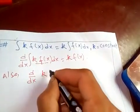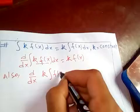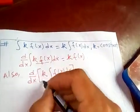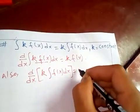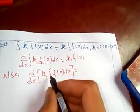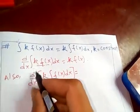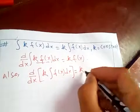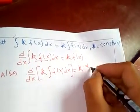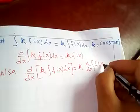I'm going to set k times the integral of f(x)dx. Since k is constant, it comes out of the differentiation: d/dx of k times integral of f(x)dx equals k times f(x).